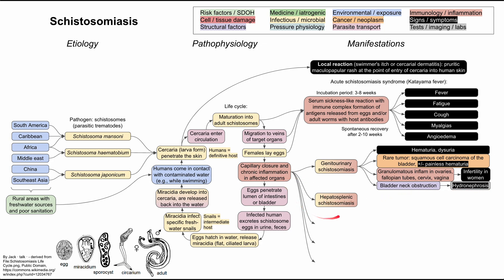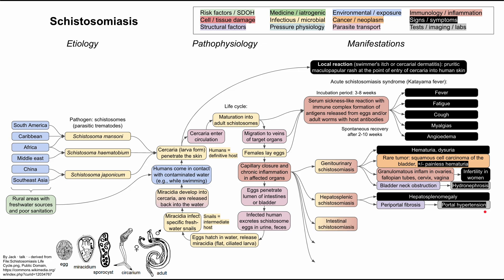The bugs can affect the liver and spleen, causing hepatosplenic schistosomiasis. This can result in hepatosplenomegaly on exam, as well as periportal fibrosis leading to portal hypertension. Symptoms of portal hypertension can include esophageal varices and hemorrhoids in the lower GI tract.